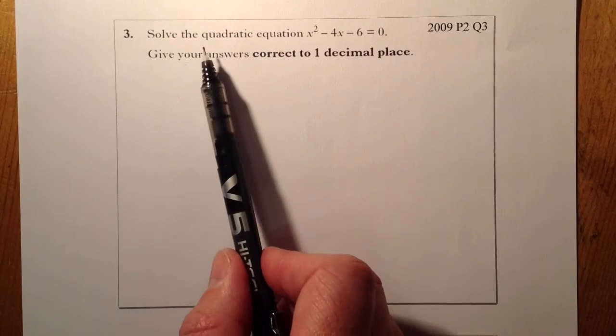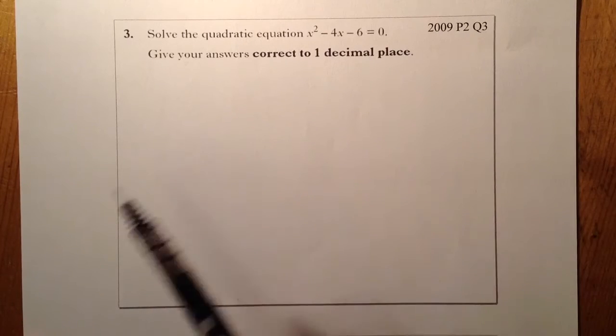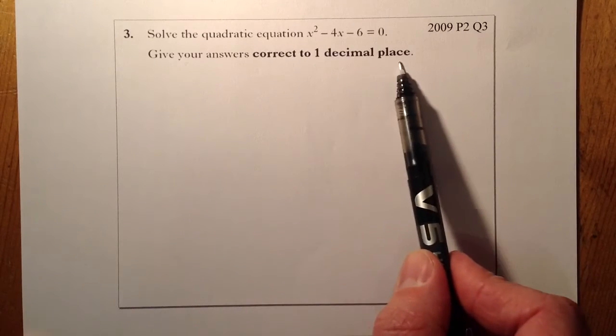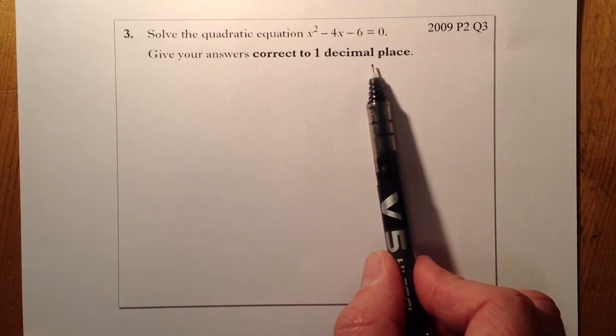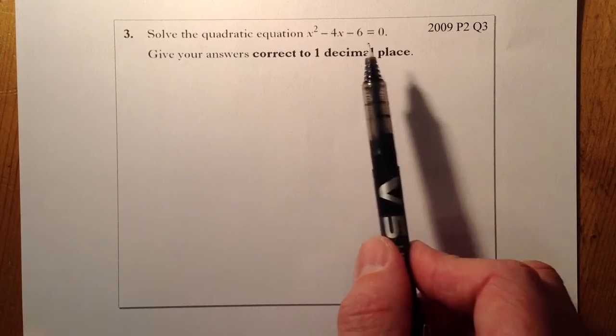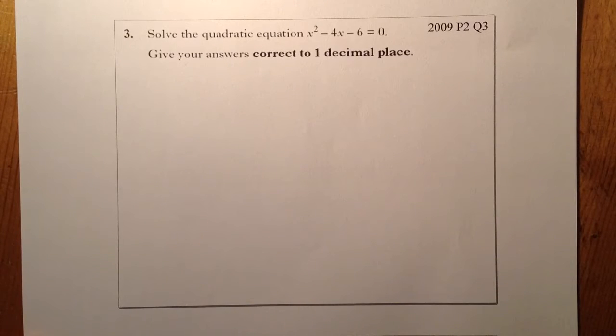We've got to solve the quadratic equation x squared minus 4x minus 6 equals zero and give your answers correct to one decimal place. This part here that's bolded should give me a clue. I won't be able to put that into two brackets and factorize it, that would be quite difficult.